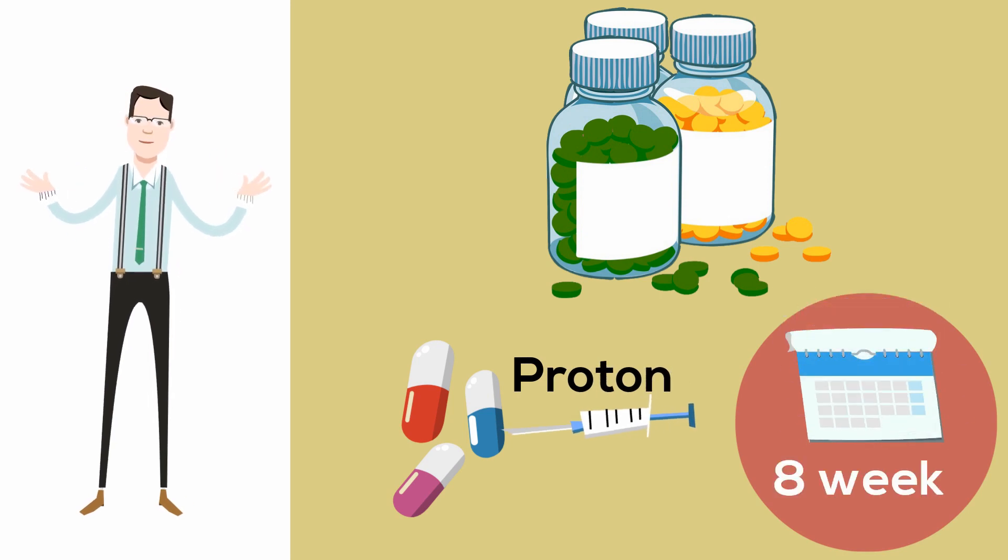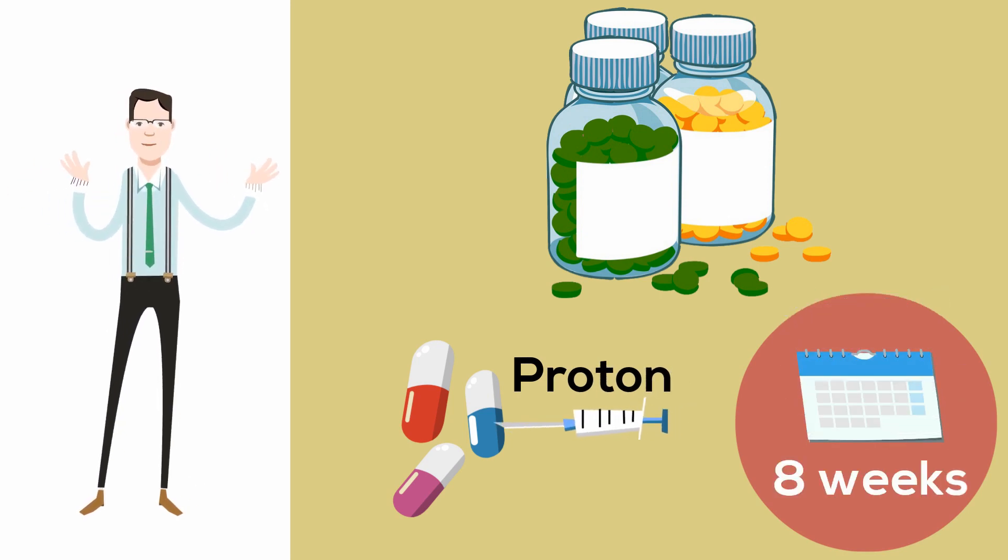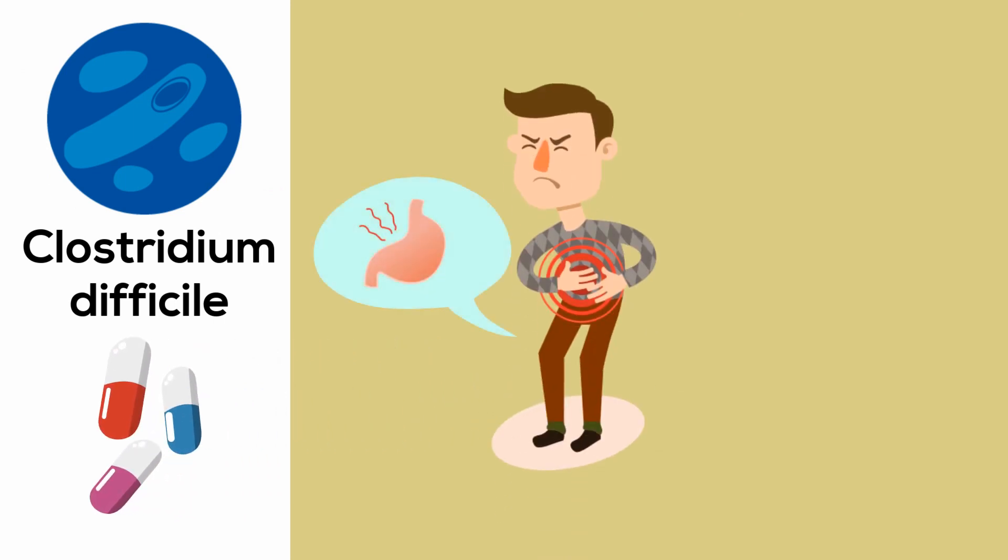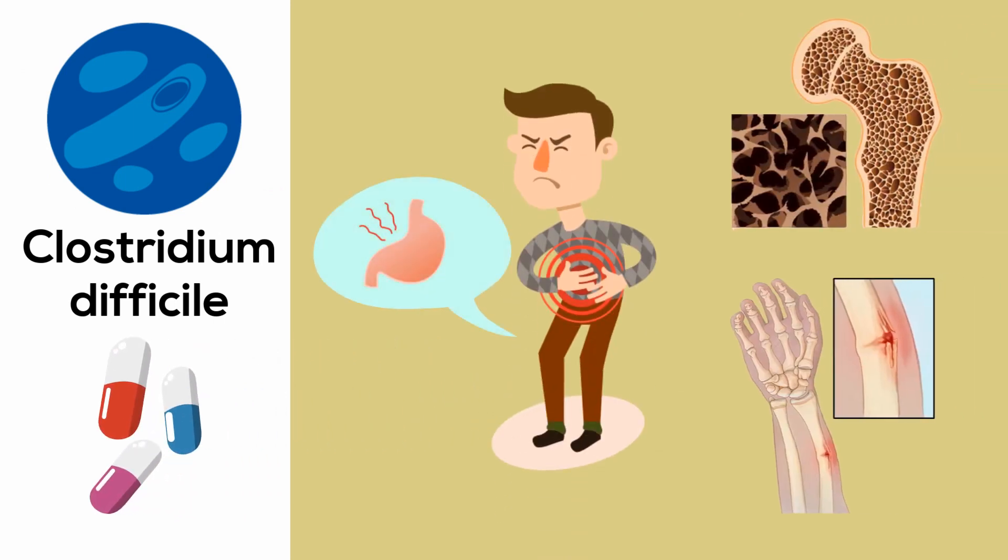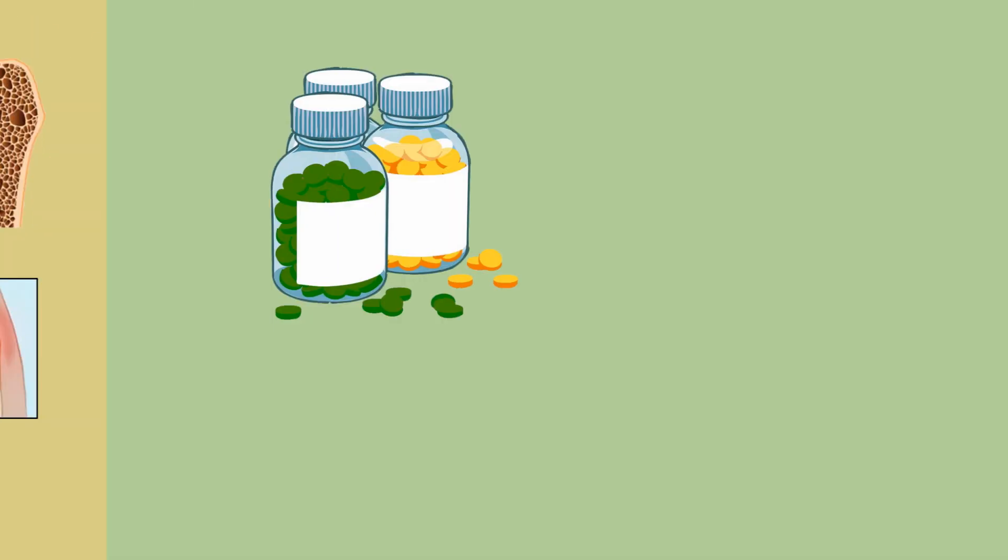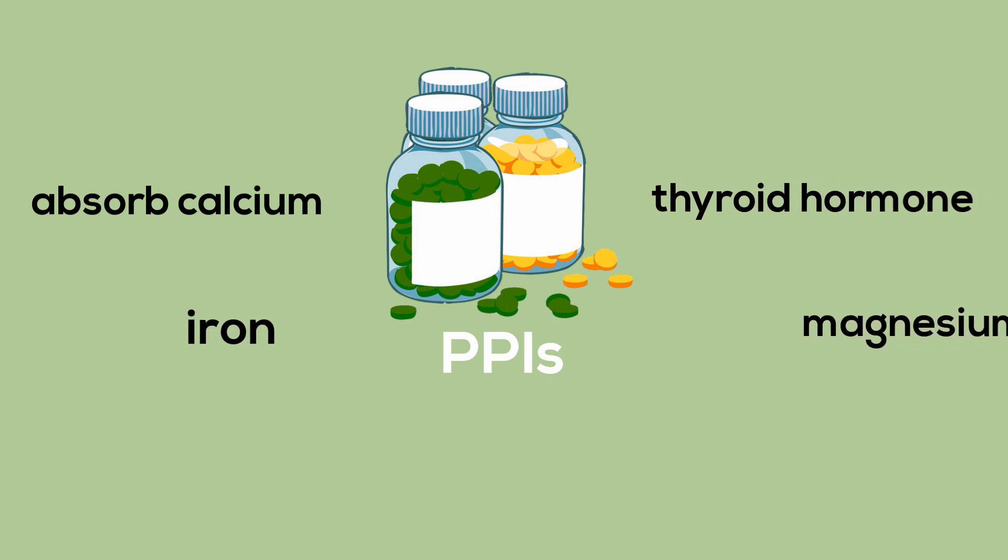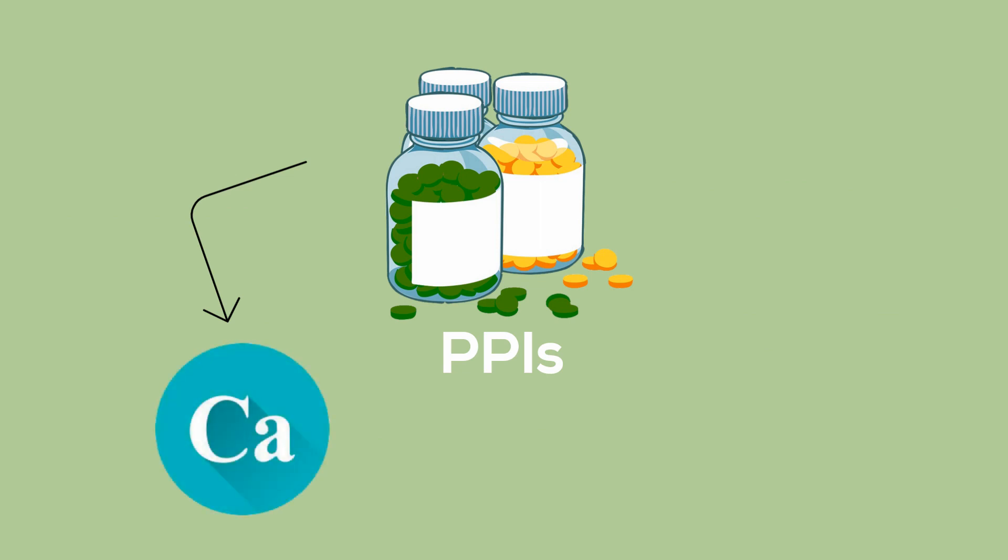PPIs can cause clostridium difficile infections, stomach pain, bone loss, and fractures. Individuals taking PPIs are less able to absorb calcium, thyroid hormone, iron, magnesium, and vitamin B12. The strongest effect is on calcium and magnesium.